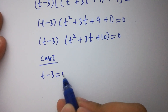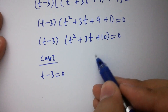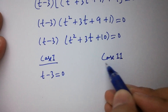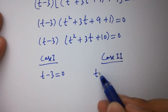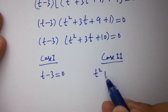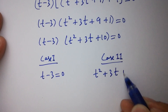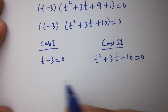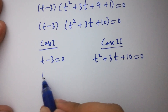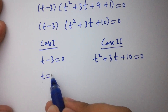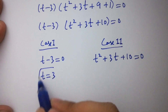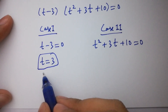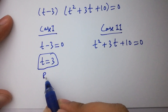So t minus 3 times t square plus 3t plus 10 equal to 0. We have two cases: case one is t minus 3 equal to 0, and case two is t square plus 3t plus 10 equal to 0. From case one, the value of t is equal to 3, which is our real solution.